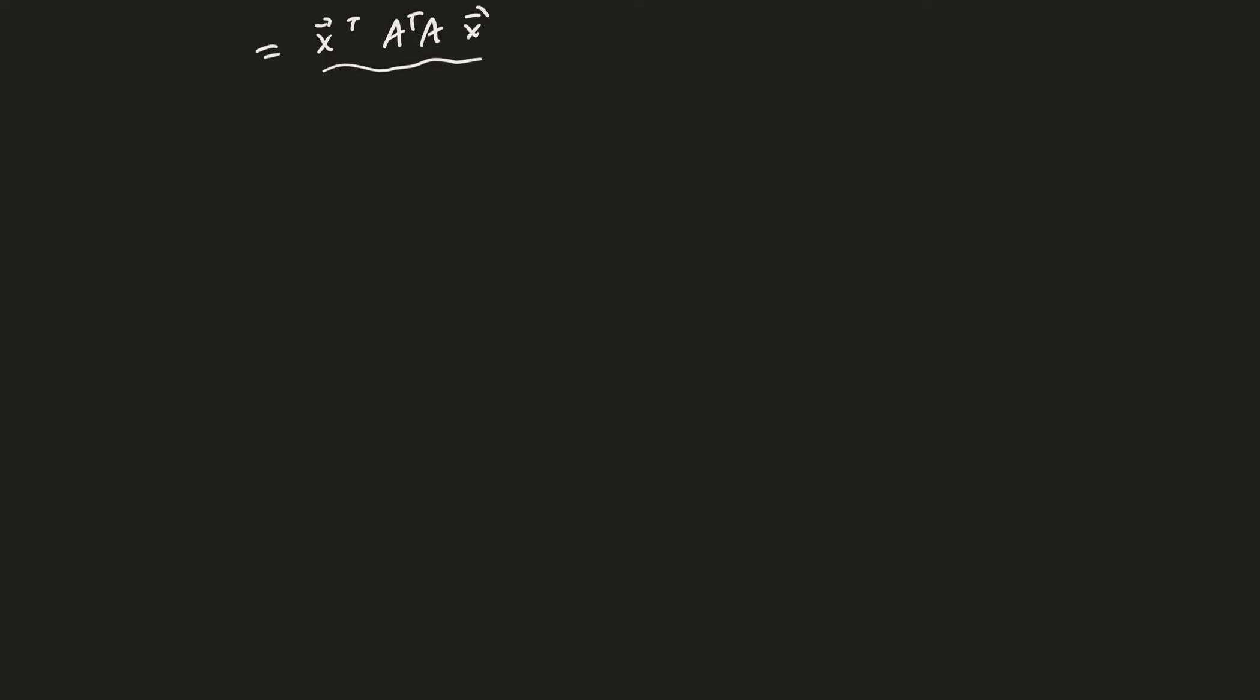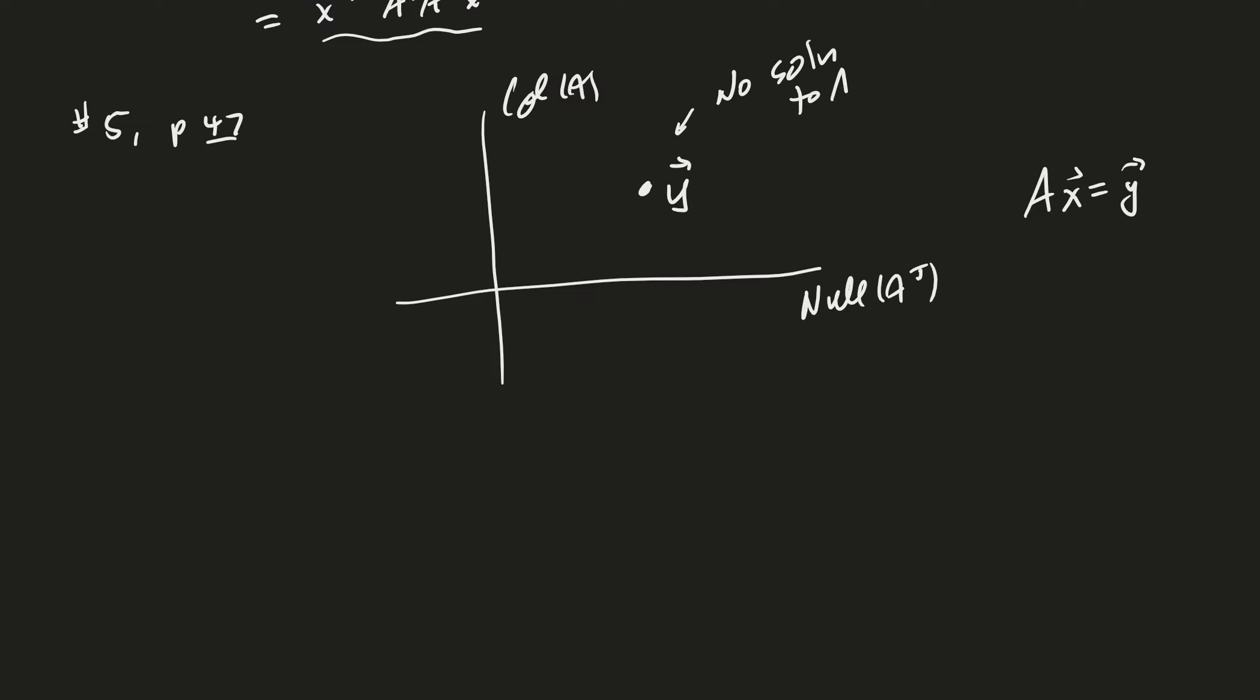Number 5 is something I did want to talk about. Let's go ahead and talk number 5 on page 47. So, in this case, we're taking a look at the column space of A, null space of A transpose, and I've got a Y that's out here. And so I'm trying to solve AX equals Y. Well, Y is not in the column space of A, right?